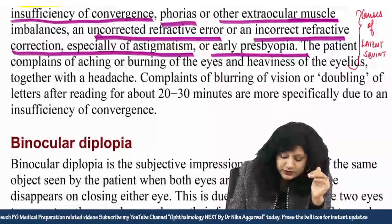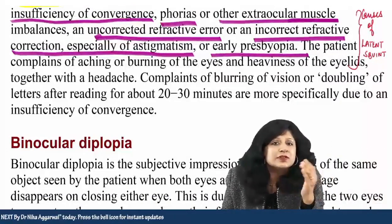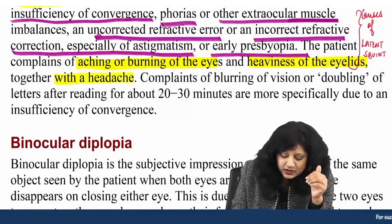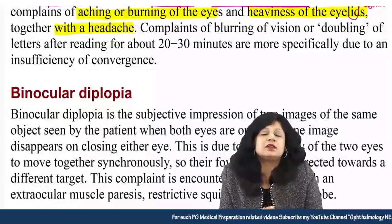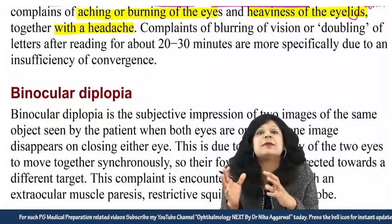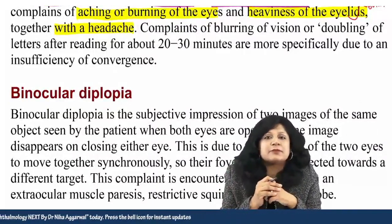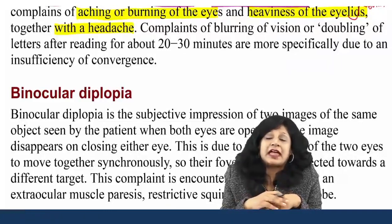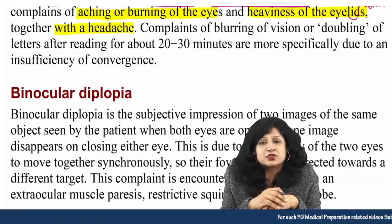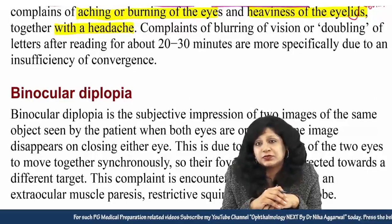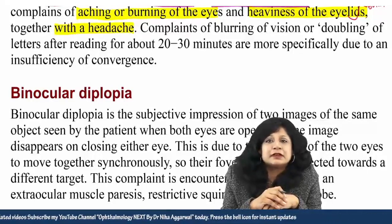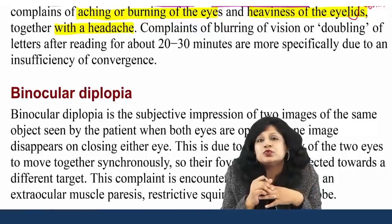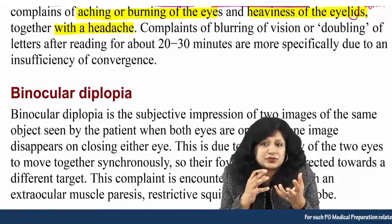Now, how will you know that this patient has asthenopia? The patient will say there is aching or burning of the eyes, heaviness of the eyelids, together with headache. This is also about understanding what the patient is complaining of versus what the patient actually has. Many times if the patient is literate they will accurately say 'I have eye strain.' But having seen all kinds of patients across different education levels and strata, they may not use the correct word — they may describe burning, aching, or heaviness over the eyelids, or some kind of headache. You should be able to identify the actual problem from what the patient is saying.